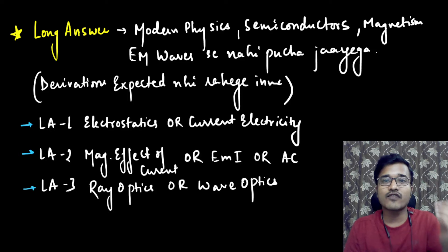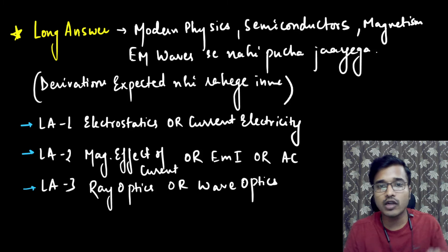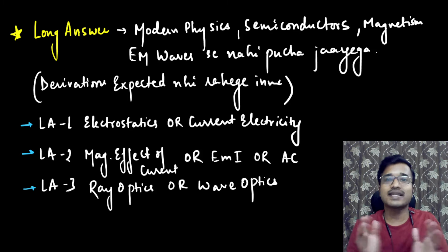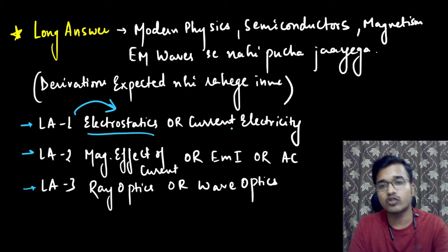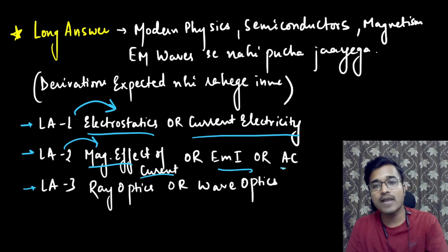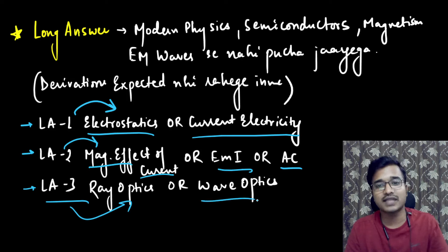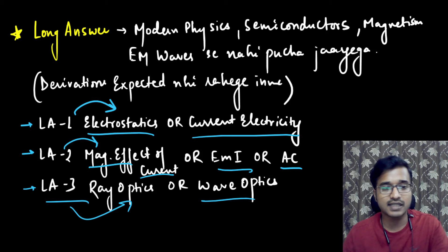Now the long answers one, two, three. We will divide one long answer that you can get from electrostatics or current electricity, and the other long answer is that the magnetic effect of current, EMI or AC, and the third long answer is that either ray optics or wave optics can be asked.